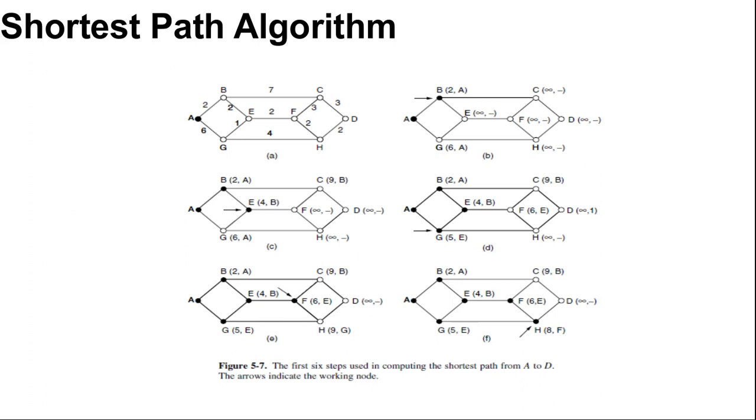To choose a route between a given pair of routers, the algorithm just finds the shortest path between them on the graph. So the concept of a shortest path we can explain here.